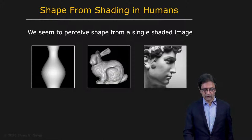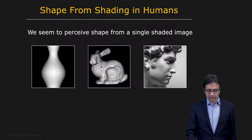Now let's take a look at human perception of shading. You and I seem to be pretty good at figuring out what the shape of an object is from its shading. For example, if you look at these three objects here, we don't seem to have much of a problem in figuring out this is a vase.